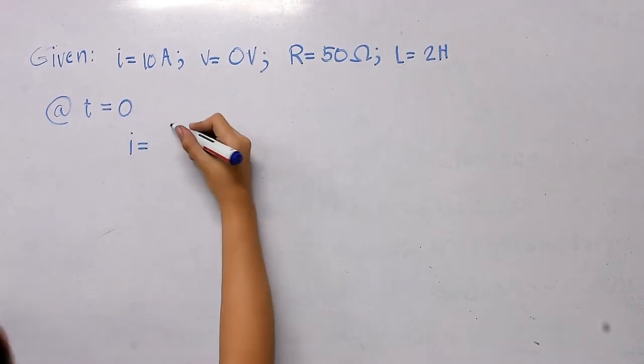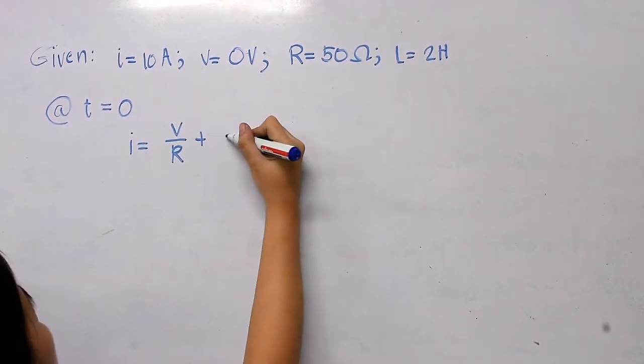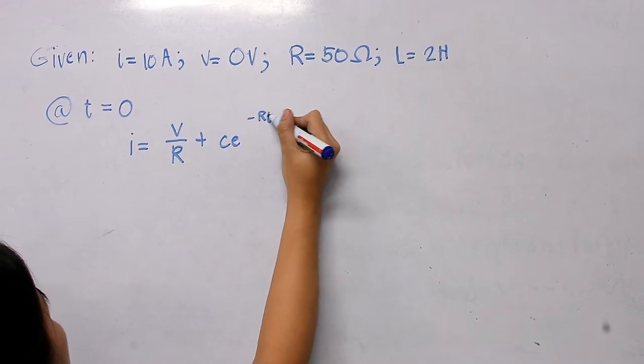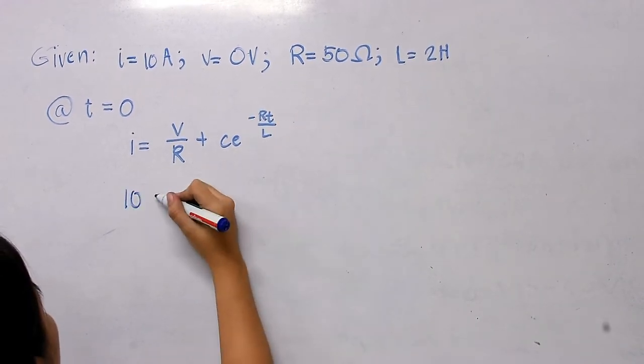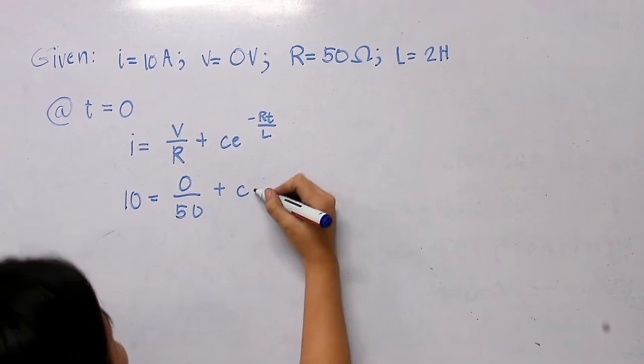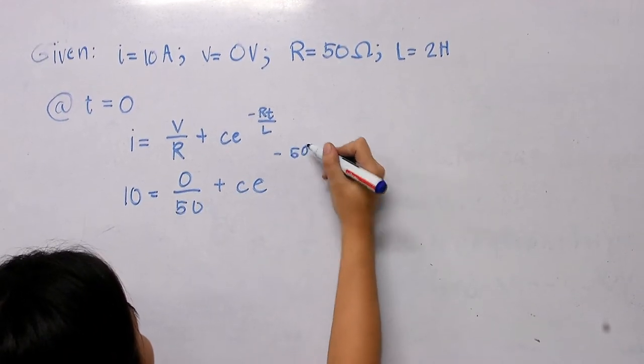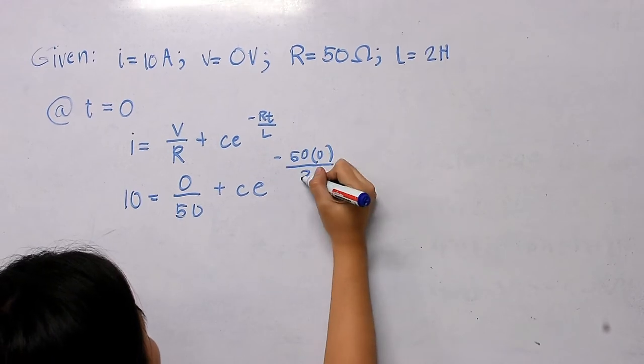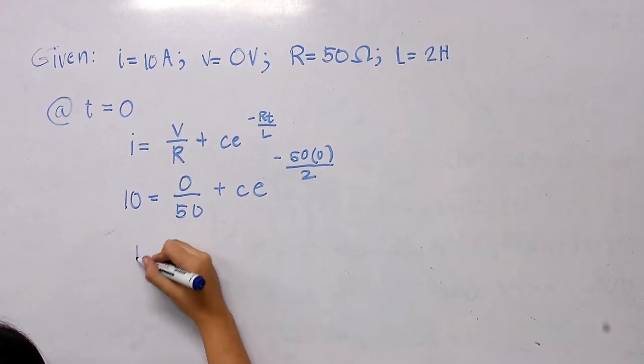To get the value of C, suppose at initial time t equals 0, substitute the given values we have now: 10 equals 0/50 plus C times e raised to the power of negative 50 times 0 over 2. Then the value of C equals 10.